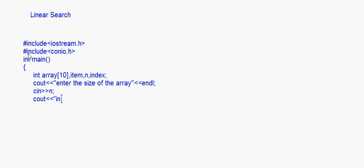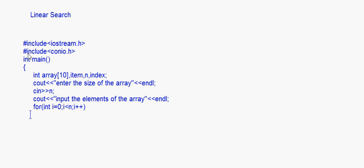After getting the size n, we input the array elements. We use a for loop: for int i equal to 0, i less than n — note it's i less than n, not i less than size or i less than 10, because n is now the actual size of the array — then i plus plus. Inside this, we ask the user to input elements using cin array[i]. You can add a cout statement to prompt the user as well.